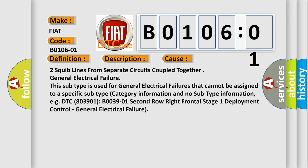This subtype is used for general electrical failures that cannot be assigned to a specific subtype category. For example, DTC B003901 2nd row right frontal stage 1 deployment control, general electrical failure.